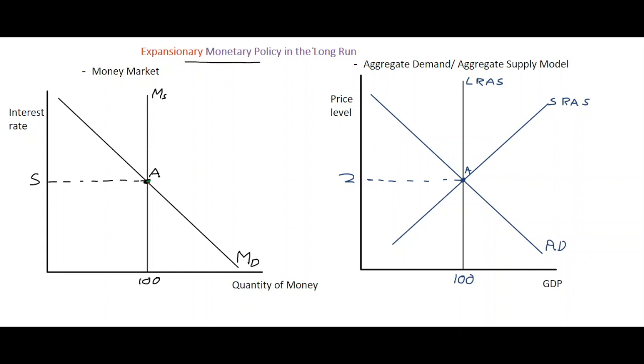Expansionary monetary policy influences the economy in a number of ways. For expansionary monetary policy, the central bank will increase the money supply in the economy. This will be through the open market purchase or repo of government bonds, and this may be on a short-term basis such as seven days.